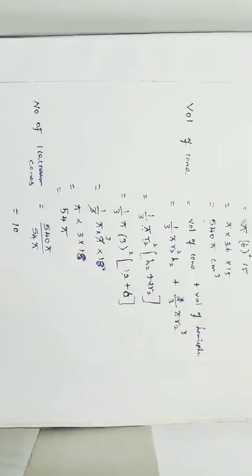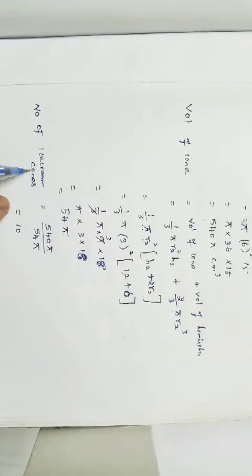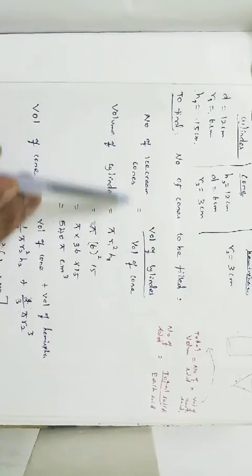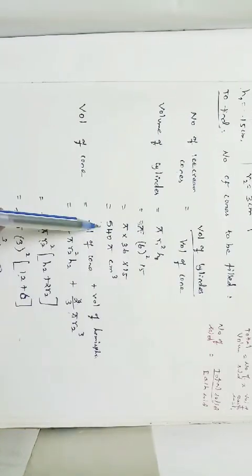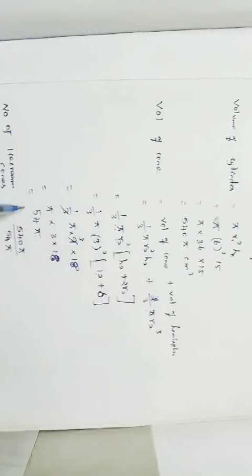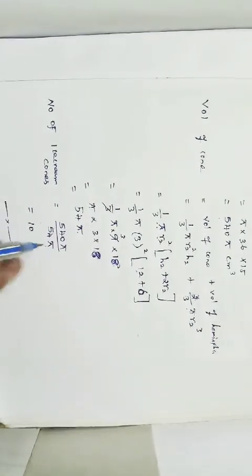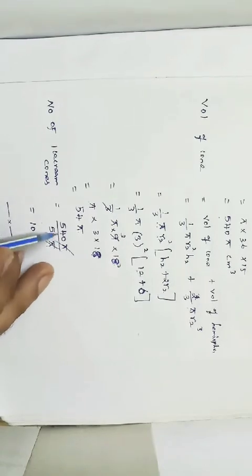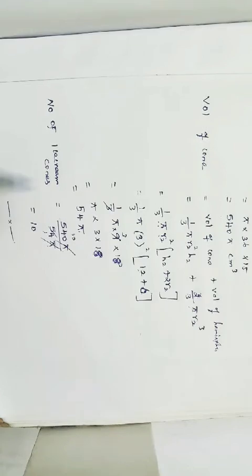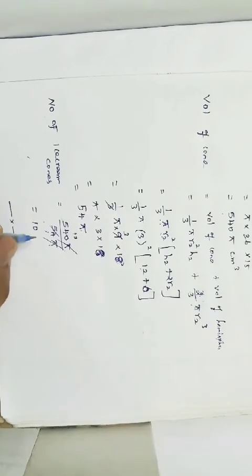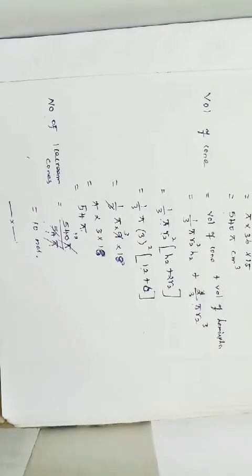Number of ice cream cones = volume of cylinder ÷ volume of each cone = 540π ÷ 54π. The π cancels, giving 540 ÷ 54 = 10. So the number of ice cream cones is 10.